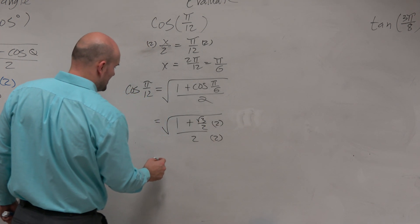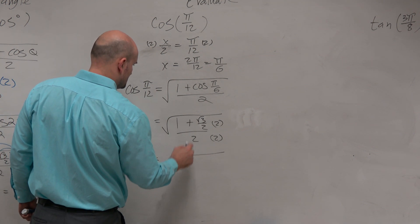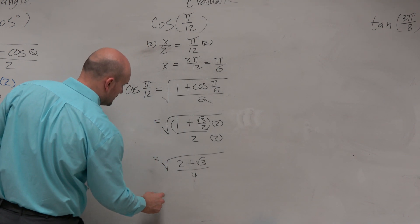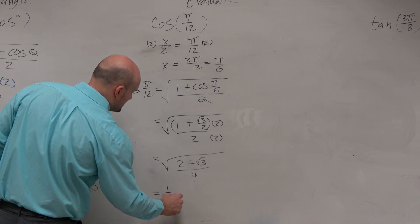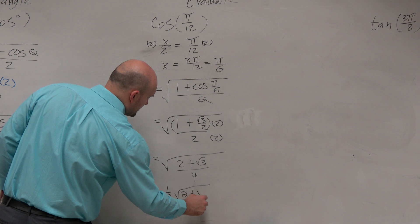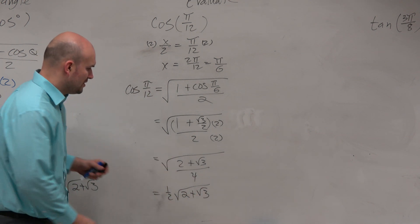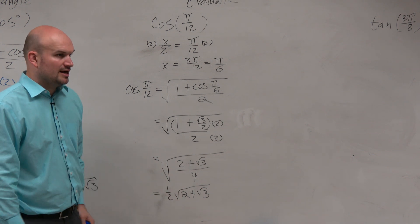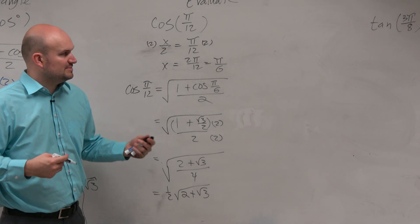Multiplied by 2 on top and bottom, 2 plus the square root of 3 over 4, and I'll just write it like this. Just take the square root of 4 and bring it out in front, so it's the exact same type of problem.